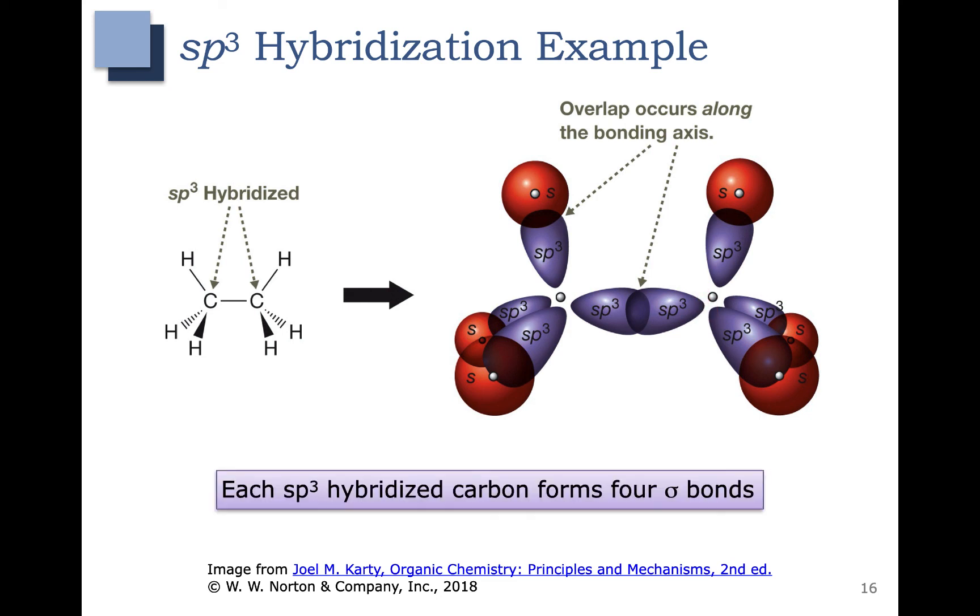So in this example, each sp3 hybridized carbon is forming four sigma bonds: 1, 2, 3, 4 for the left carbon, 1, 2, 3, 4 for the right carbon. And a good way to identify sp3 hybridized carbons is that they will typically have four single bonds.